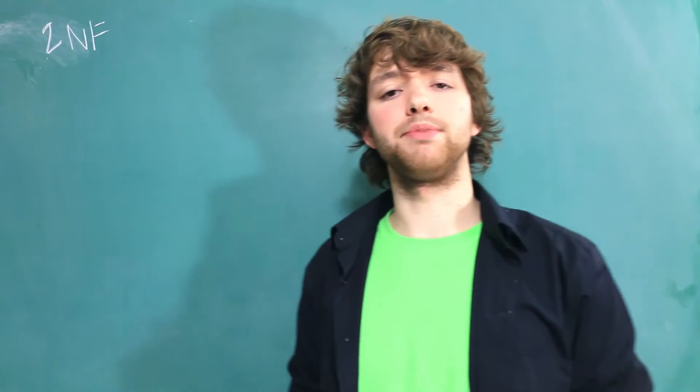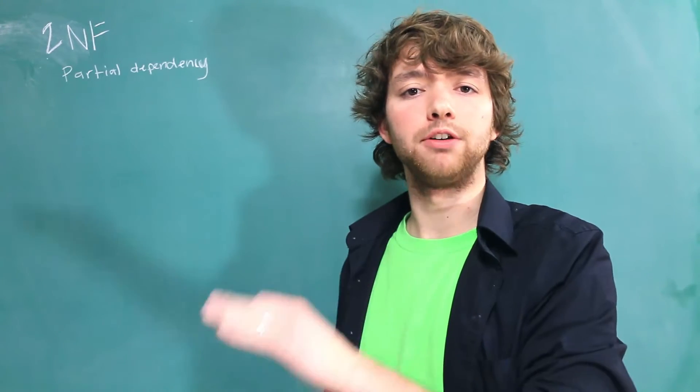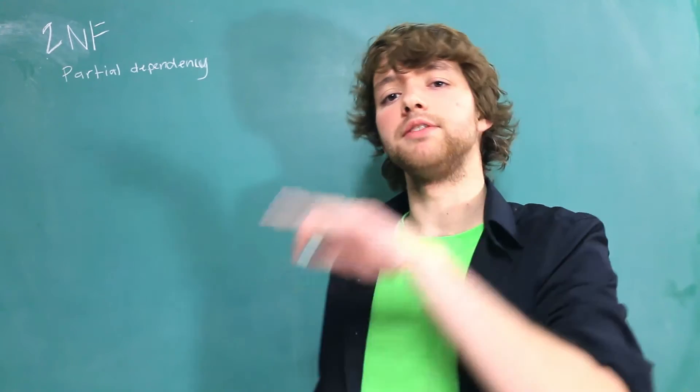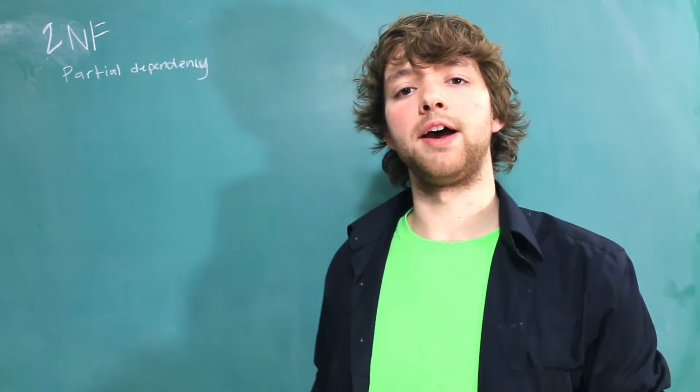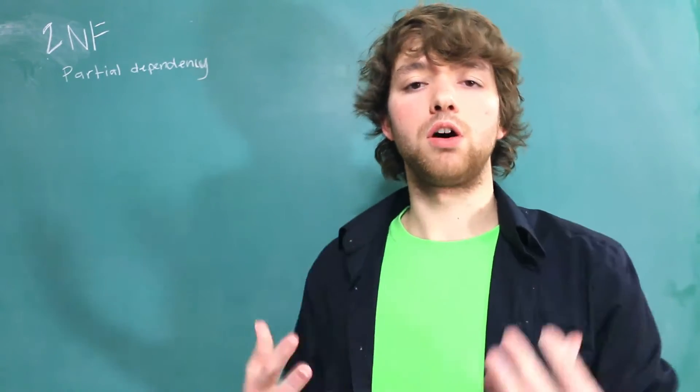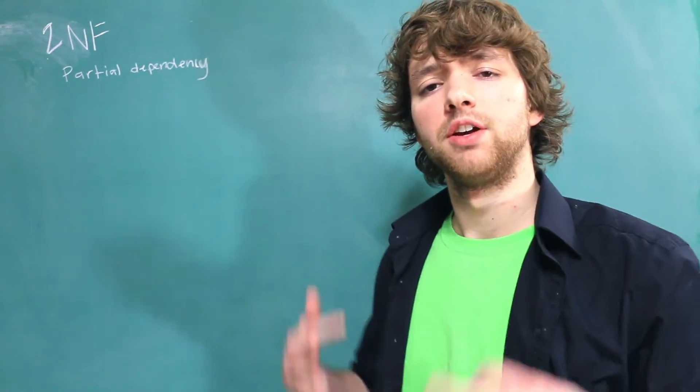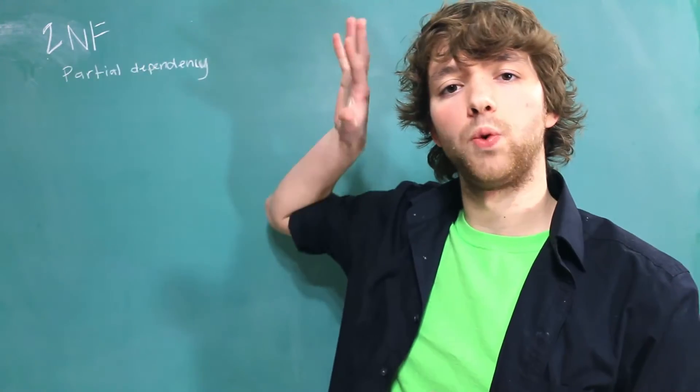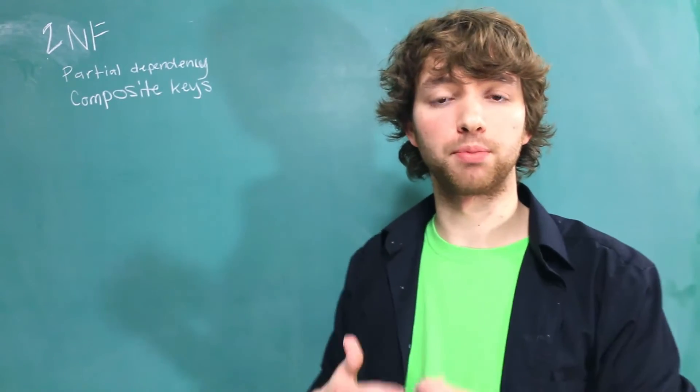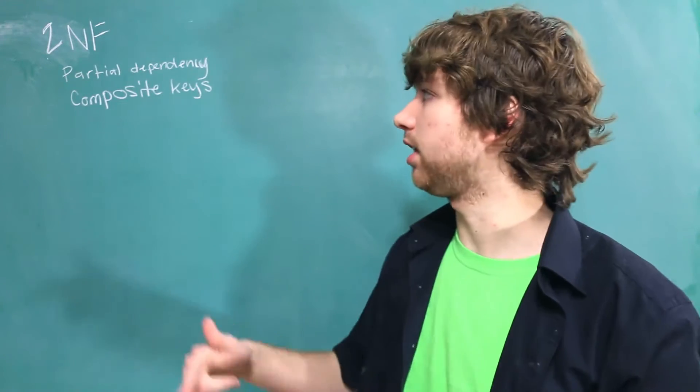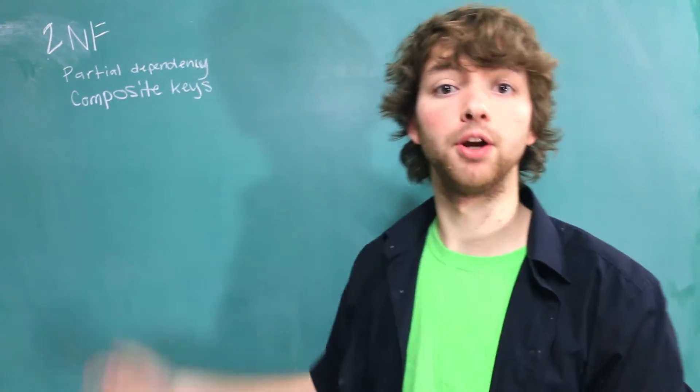Now, second normal form deals with something known as partial dependencies. Now, we've talked about when you have a value for a column, it depends on that entity. Partial dependencies come in when you have two or more columns for the primary key. So this always deals with compound or composite keys. When you have multiple columns that are part of the primary key, that primary key is known as a composite primary key.